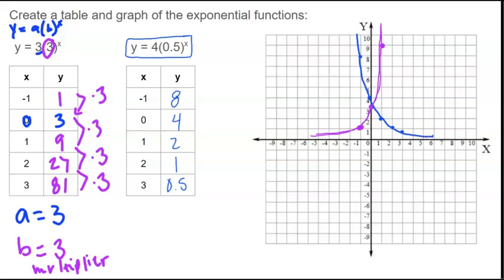So as you can see, the blue and purple lines do look a little different. The blue line is what we call a decay function, because if we follow it from left to right, it's going down. It's getting smaller. It's a decreasing function.